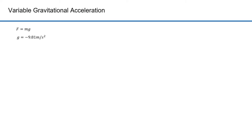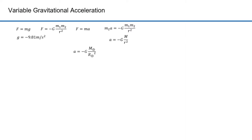I want to first derive the acceleration g from Newton's law of gravitation. Newton's universal law of gravitation states that the gravitational force F equals minus G times m1 times m2 over r squared. Everything except r is a constant in this equation for the earth, so F is a function of the distance r and is proportional to 1 over r squared. According to Newton's second law, F equals m2a, thus equals minus G m1 m2 over r squared, and I substituted m2 for m. The m2 cancels and I'm left with an equation for acceleration, substituting capital M for m1. This is the formula for acceleration at the surface of the earth, which is the acceleration at the earth's surface.